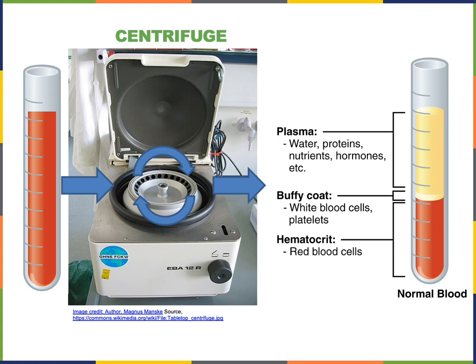The buffy coat component consists of the white blood cells, also known as leukocytes, and the platelets, also known as thrombocytes. The hematocrit component of the blood is primarily red blood cells, also known as erythrocytes.